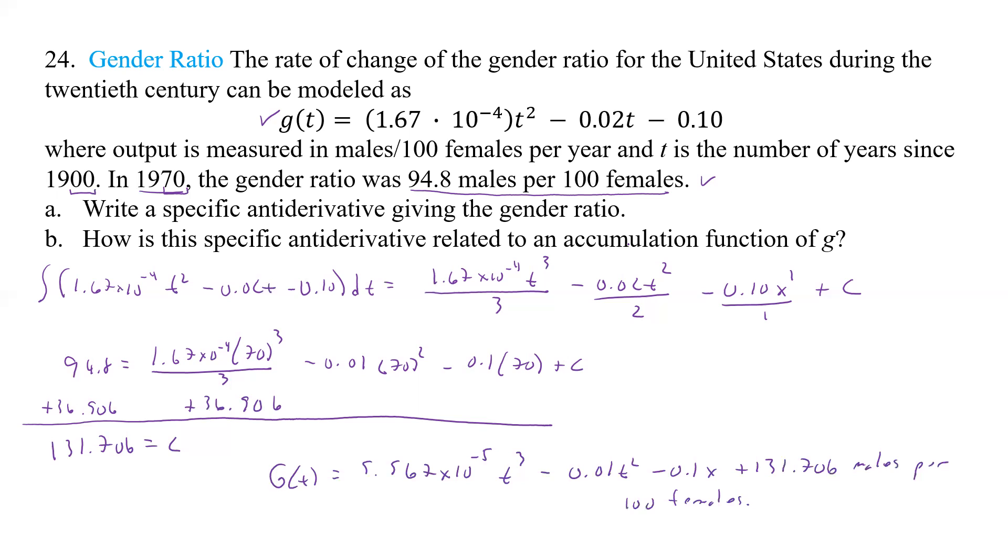Well, the specific antiderivative is the formula for the accumulation function of G passing through a specific point. And it's going to be passing through a point 1970 and 94.8.